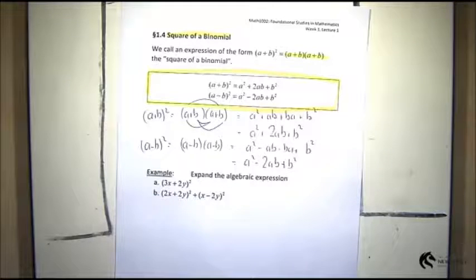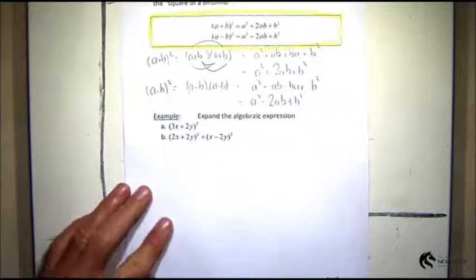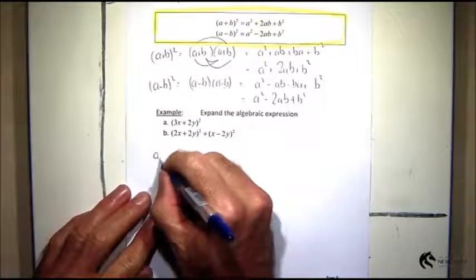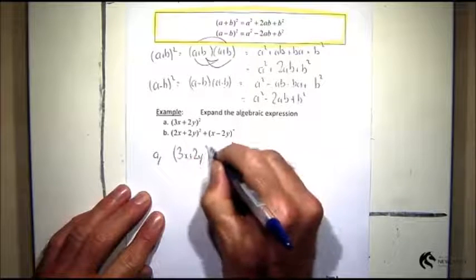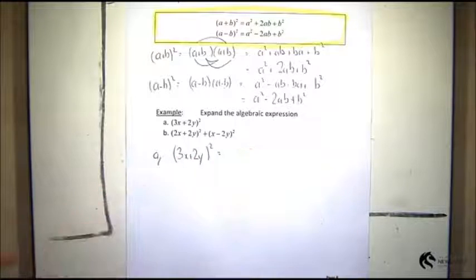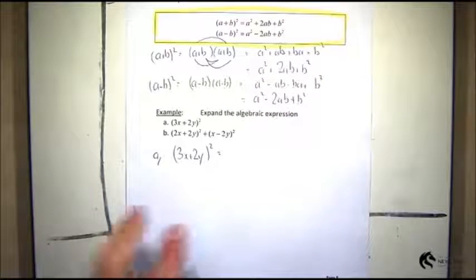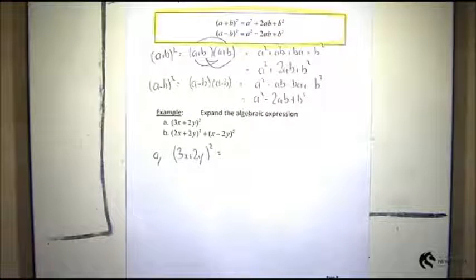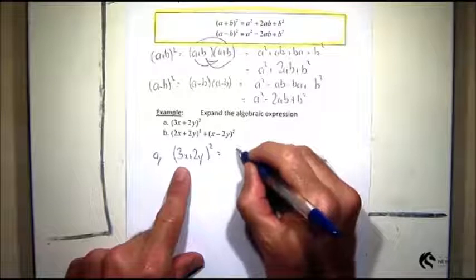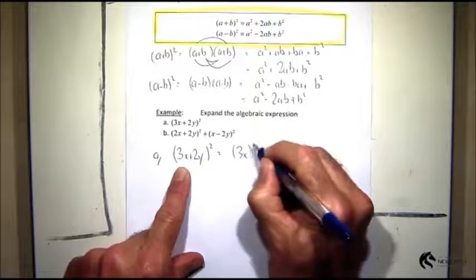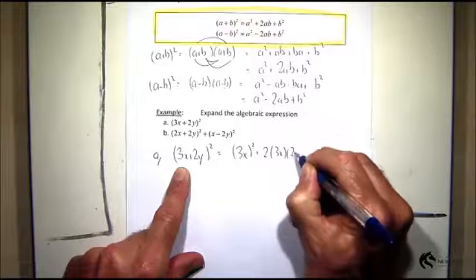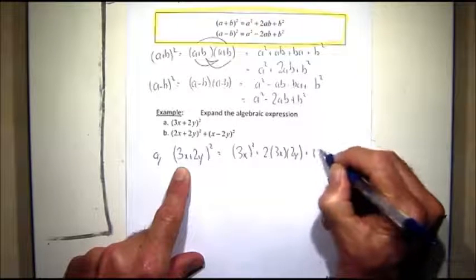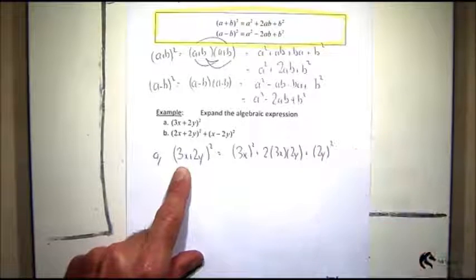So let's have a go. Let's do these ones. It says (3x + 2y) all squared. That will become, according to my formula—I mean you can multiply it out if you want to—but I will just say it's got to be (3x)² + 2 times 3x times 2y + (2y)².